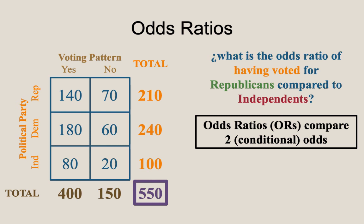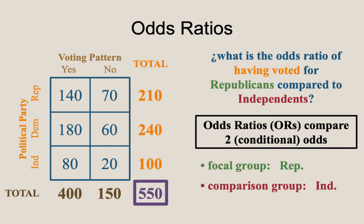An odds ratio inherently compares two conditional odds. For this process, we need three specific things. First, we have a focal group — in our scenario, the Republicans — which appears in the numerator. Next, we need a comparison group — in this case, the Independents — which appears in the denominator. Most importantly, we need some result or outcome or activity of interest — in this case, having voted. If you start by clarifying these three things, you shouldn't encounter many issues with the calculations. The same three concepts — focal group, comparison group, and result of interest — also show up in relative risk calculations, which take the ratio of two probabilities rather than two odds.